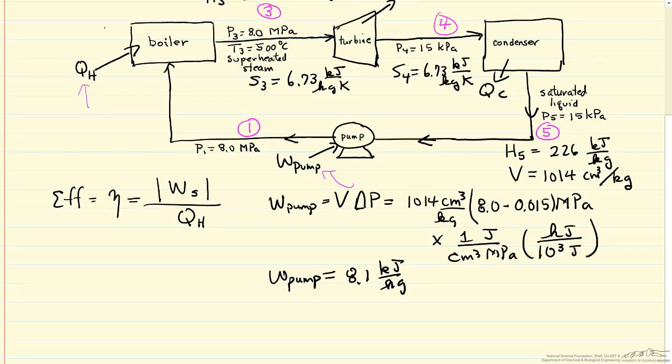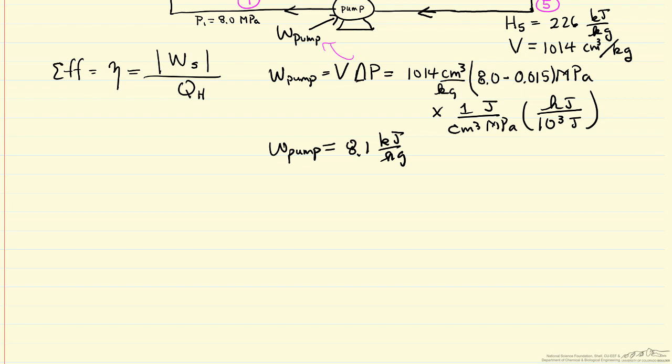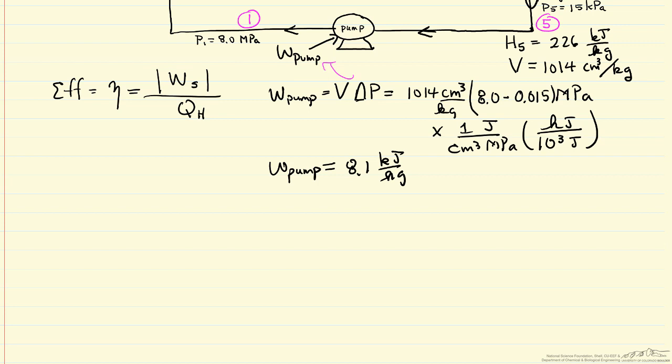If I want to calculate enthalpy at 1, which is the value entering the boiler, H1 is going to be H5, that entering the pump, plus the work of the pump. So H5 we looked up in the steam tables, work of the pump we just calculated. So this is 234 kilojoules per kilogram is H1.